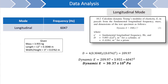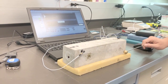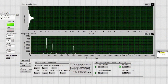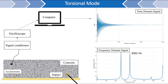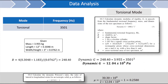This value is very close to the value calculated from using the transverse frequency, which is a good sign that the testing has been accurate. Lastly, the torsional mode will be excited and used to calculate the dynamic modulus of rigidity. The peak fundamental torsional frequency was found to be at 3,501 Hz. Looking at the frequency domain signal, we can see that the transverse mode was also excited by the impact along with the torsional mode. We can identify the torsional mode as the peak at 3,501 Hz because we already know the location of the transverse mode from earlier testing. This result is then used to calculate the dynamic modulus of rigidity of the specimen, which was found to be 12.04 GPa.